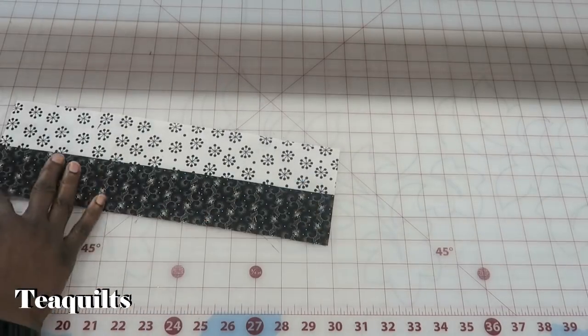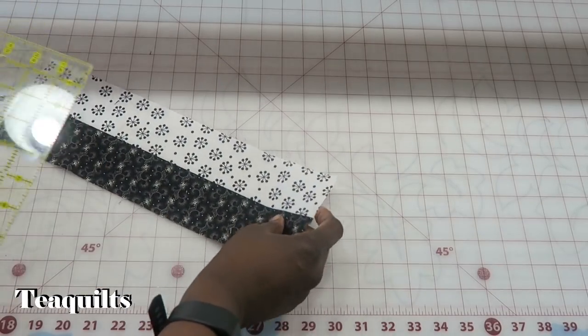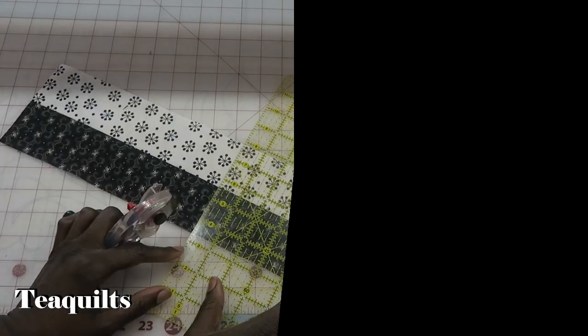And now when I rotate this around to the other side I can now cut four and a half inch pieces.